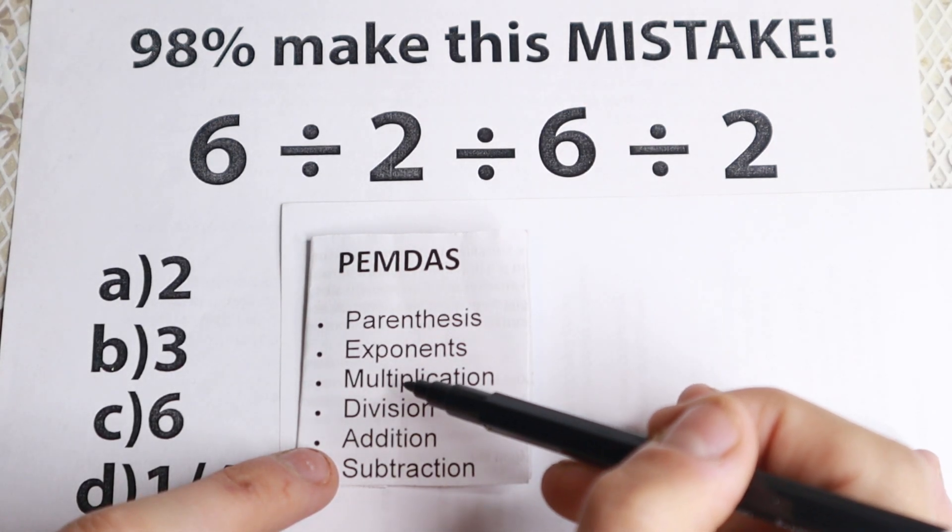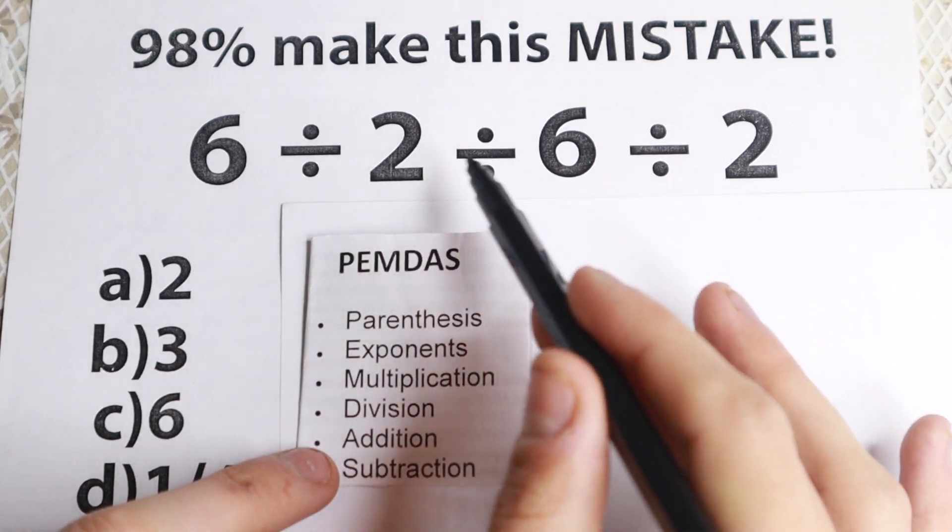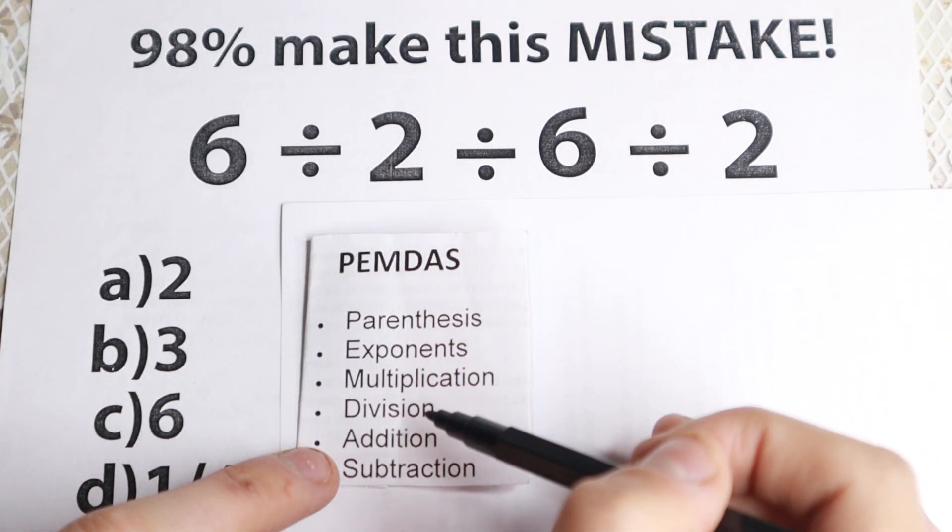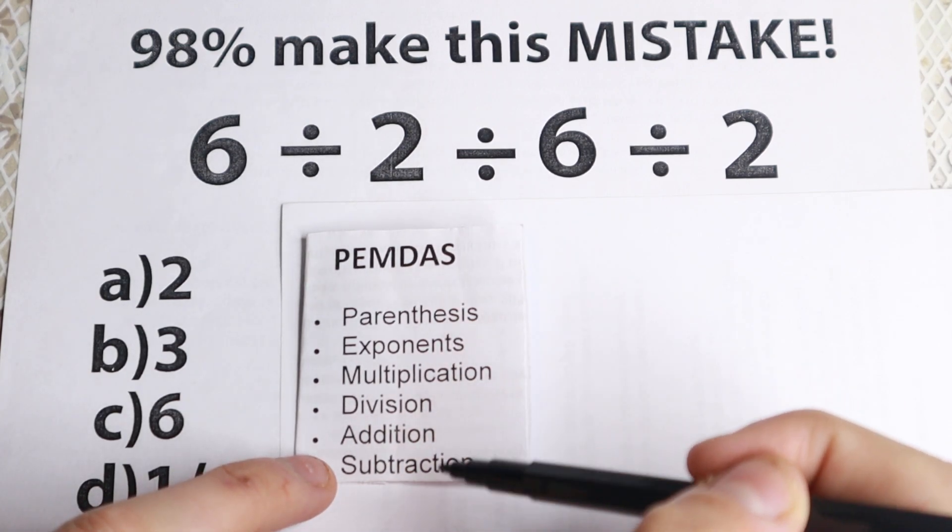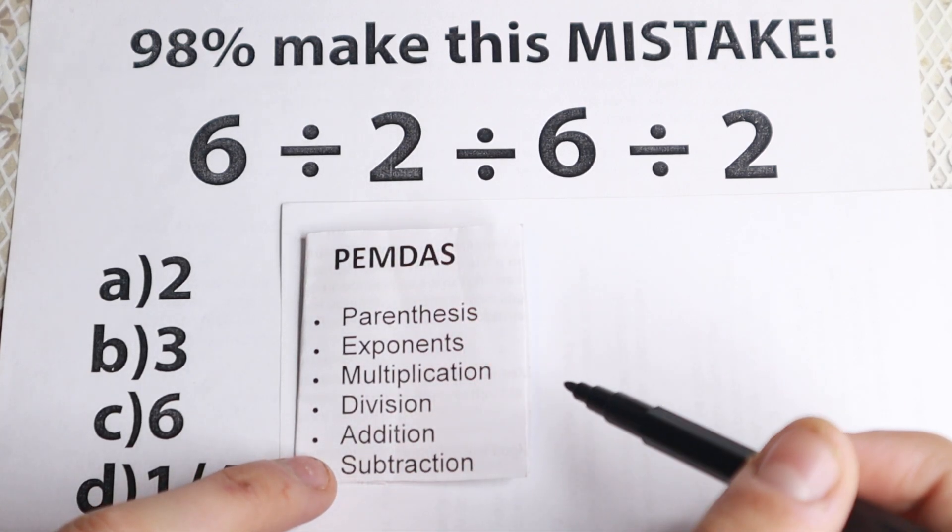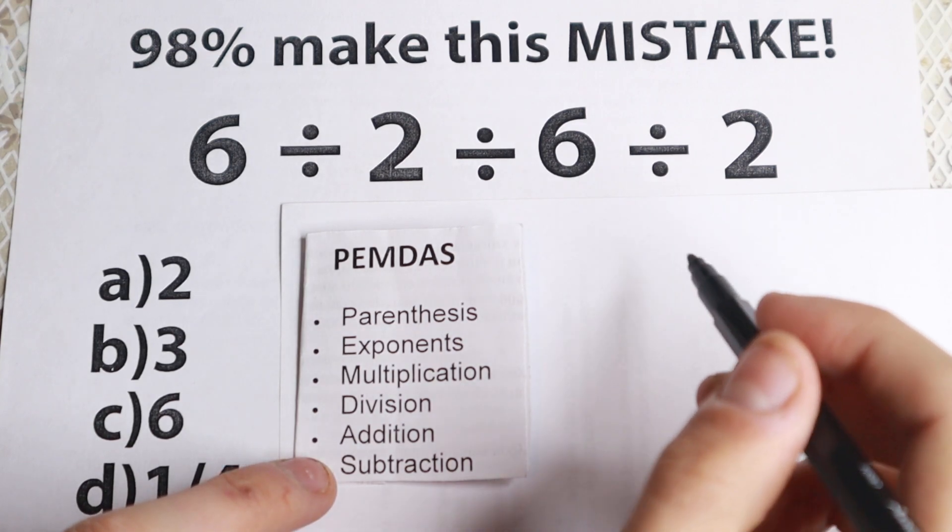So do we have multiplication? No, we have only division. So only division. And we don't have addition and subtraction. So with all these operations we have only division. And how can we solve this correctly?